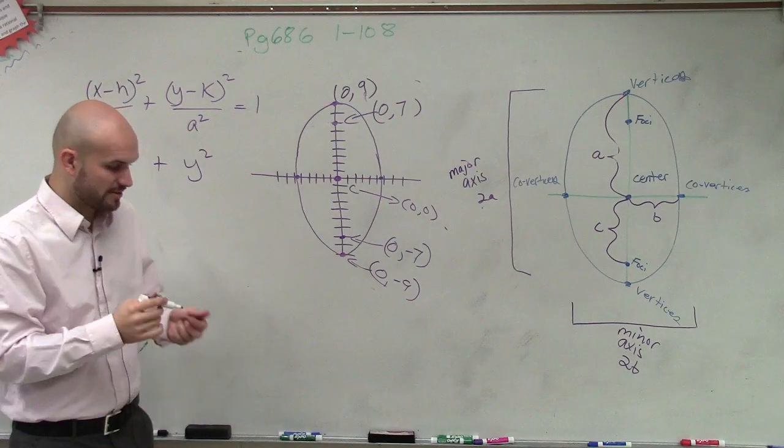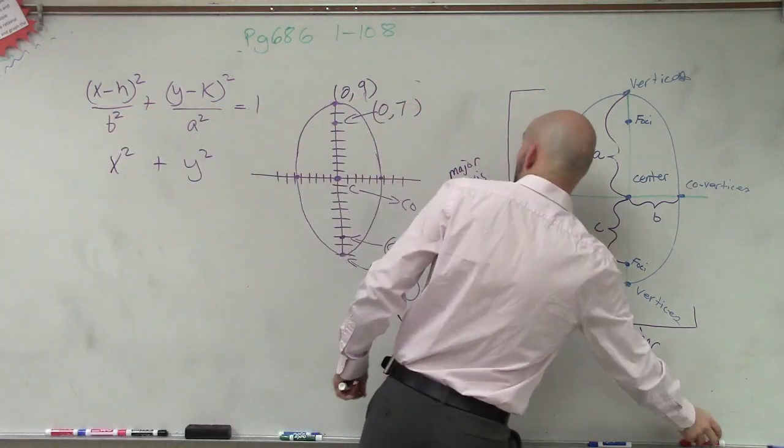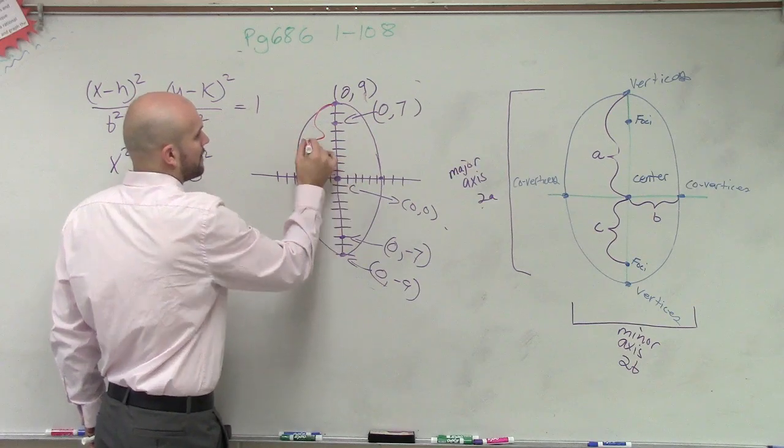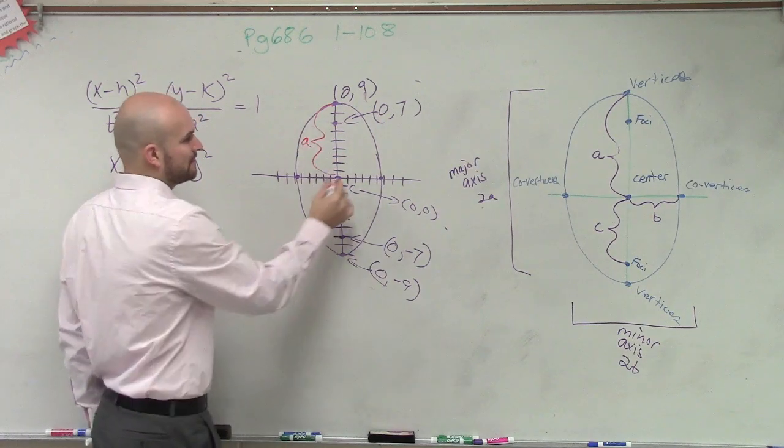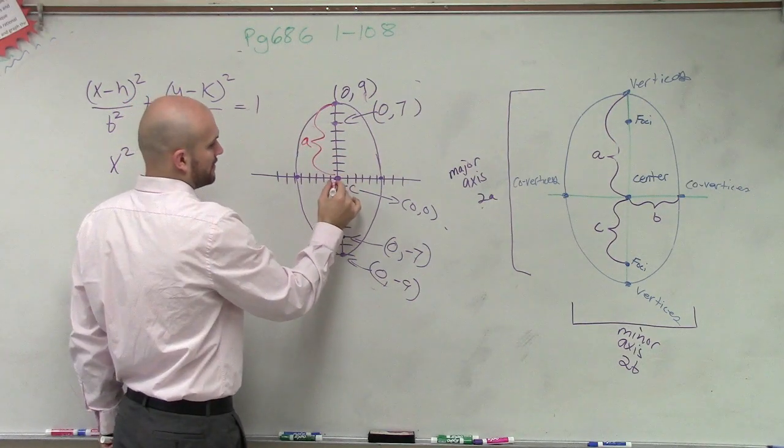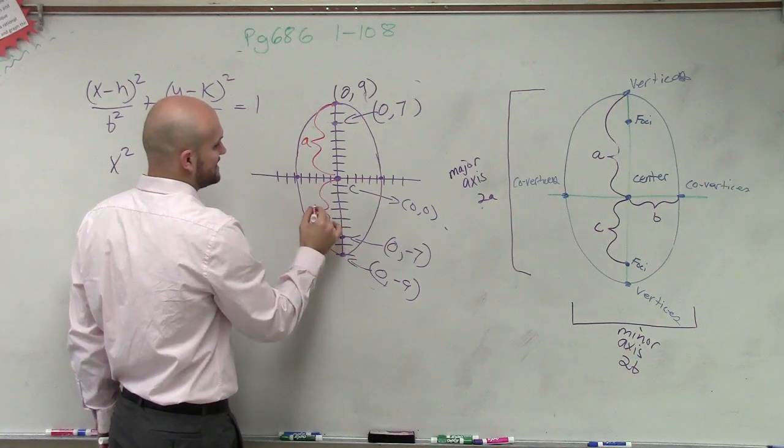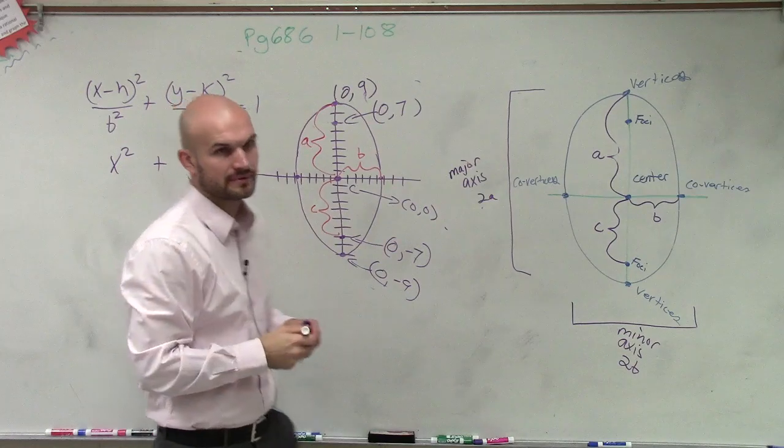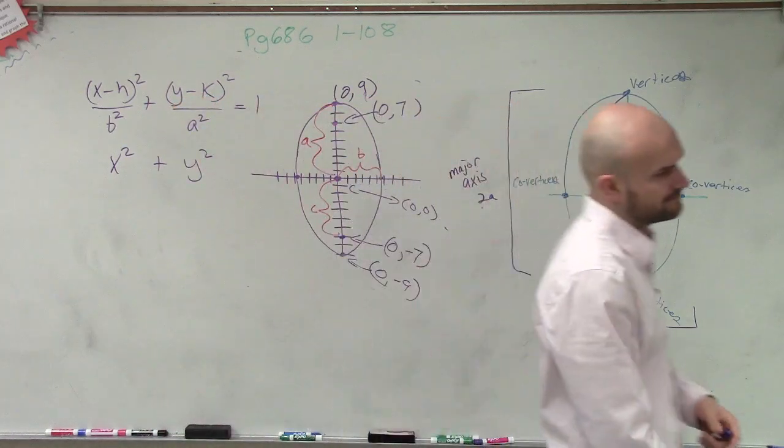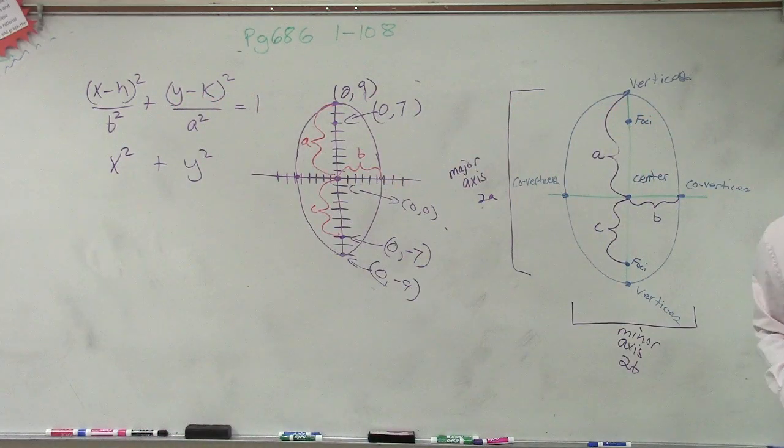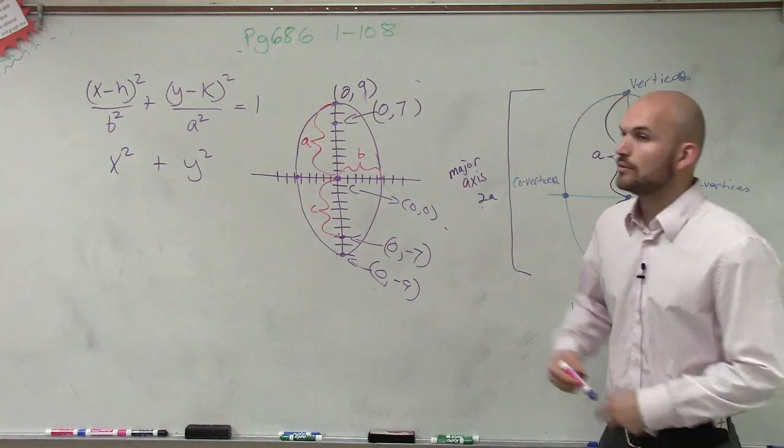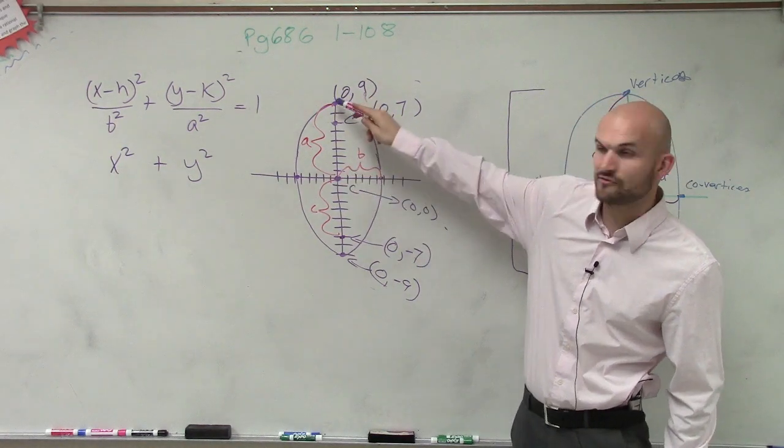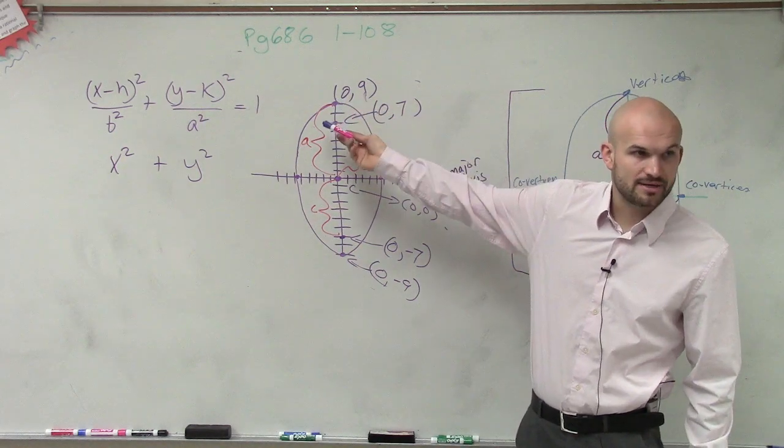All right, so first of all, now we're going to determine what our a and our b are. So remember, that distance is a, right? This distance is c, and this distance is b. So can we determine what our a is? So a, the distance from our center to our vertex, is going to be 9.